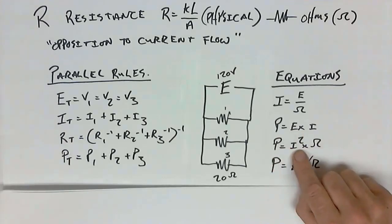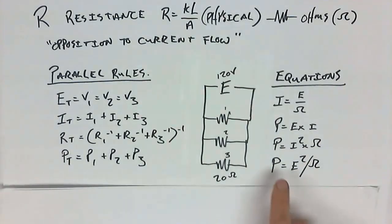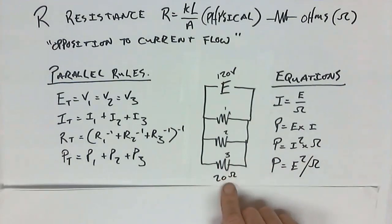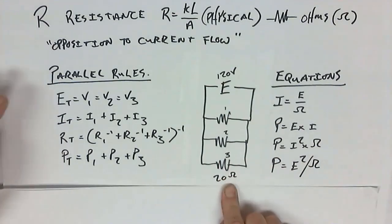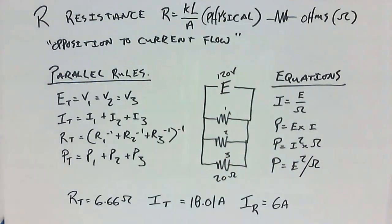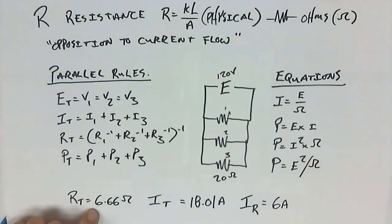Our power formula again: I squared times the ohms, and E squared divided by the ohms would also give the power. It doesn't matter which of those three power formulas you choose. So with a 120-volt circuit with three resistors, each at 20 ohms, R total is 6.66 ohms — it has to be less than the smallest resistor.